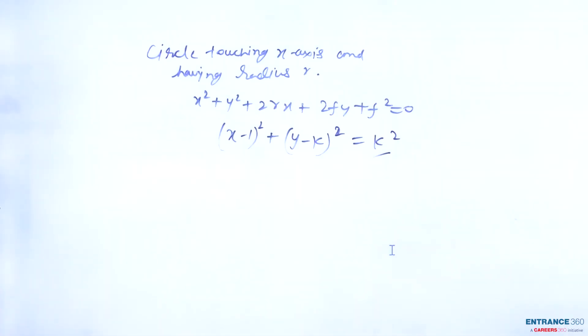And this circle will pass through (2,3). It is given in question. Then you can put the value (2,3) in this equation.